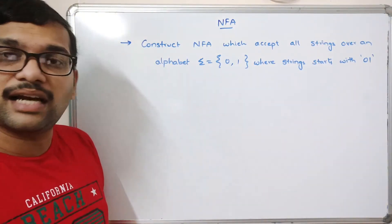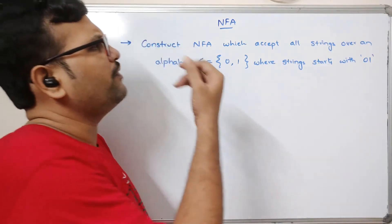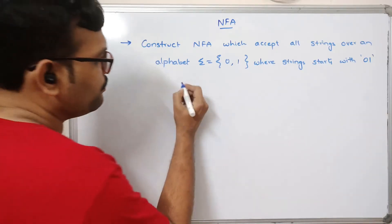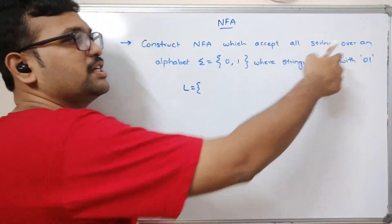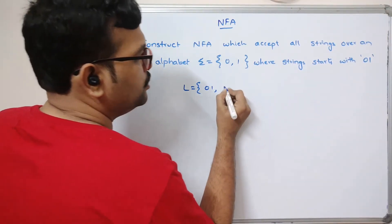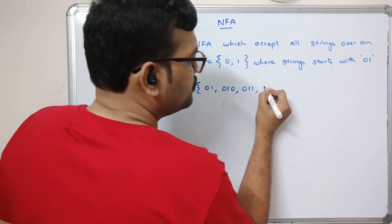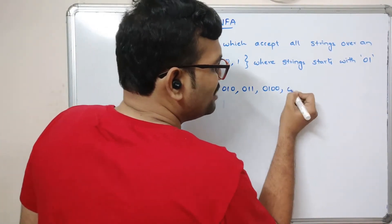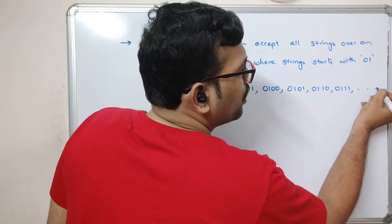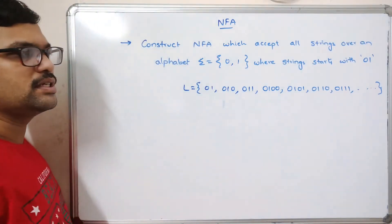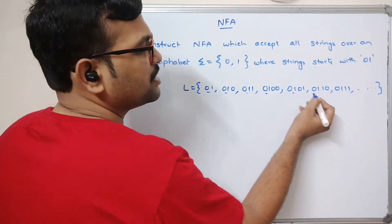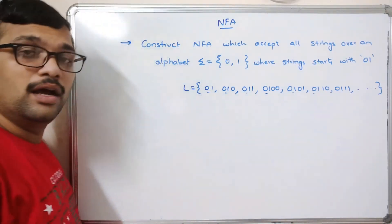First we write the language. The language L equals all accepted strings that start with '01'. So: 01, 010, 011, 0100, 0101, 0110, 0111, and so on. This is an infinite language. You can observe that in all these strings, every string starts with '01'.